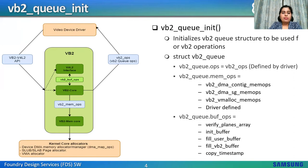Queue type can be capture, output, single, or multiplanar. Queue IO modes are based on the memory model: VB2_MMAP, VB2_USERPTR, or VB2_DMABUF. VB2 memops are based on the kernel allocators — it can be VB2_DMA_CONTIG memops, VB2_DMA_SG memops, or VB2_VMALLOC memops — and this is completely driver-defined. The VB2 ops are also completely driver-defined and can include queue_setup and buf_init.